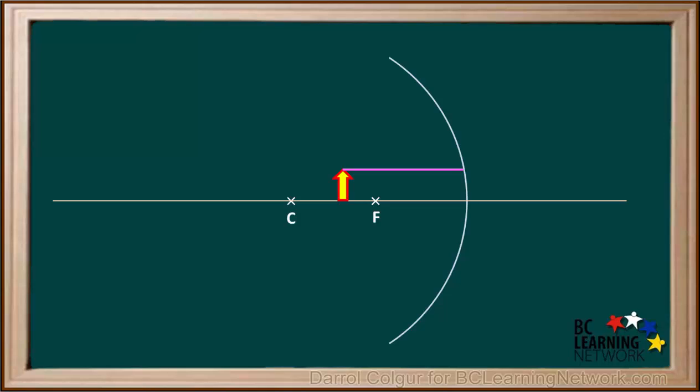Now we extend this ray, which reflects from the surface of the mirror and goes straight through the focal point F.